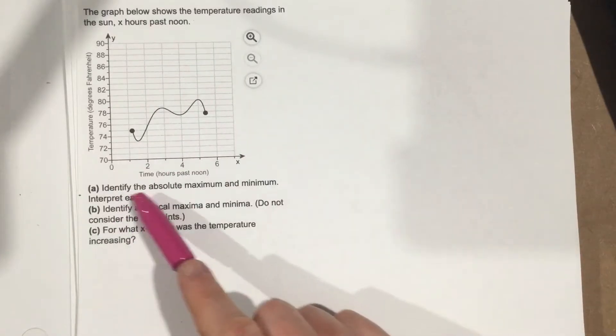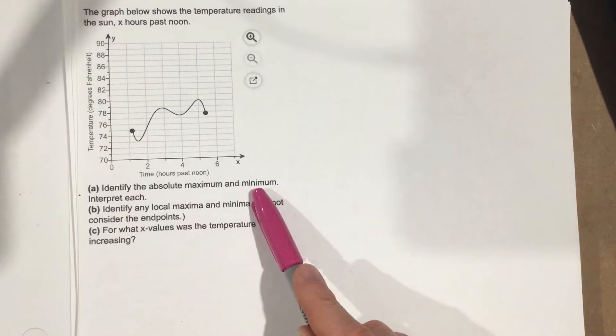Part A says identify the absolute maximum and minimum and interpret each. So let's find the absolute maximum and minimum in this graph.